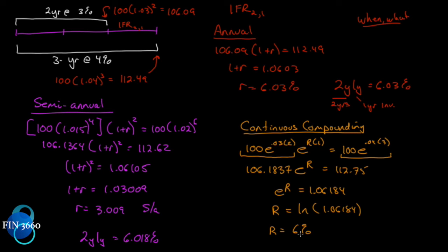Now that we know what the forward rate is, and we know that it must exist — because if it didn't, there would be arbitrage opportunities — the forward rate must fit mathematically into this framework. That's why we call it an implied forward rate: it doesn't exist in the market itself. It is implied by the existence of a two-year and a three-year spot rate. From those two spot rates, you can imply what the one-year rate will be two years from now. That's what a forward rate is.